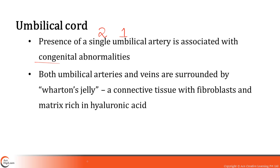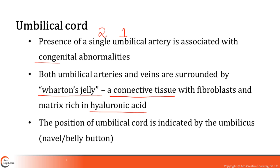Both the umbilical arteries and veins are surrounded by a tissue called Wharton's jelly, which is connective tissue rich in hyaluronic acid. The position of the umbilical cord is demarcated externally by the navel or belly button, technically called the umbilicus.